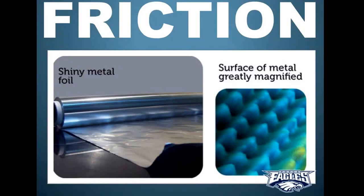Depending on the surface it might be more bumpy or not. Aluminum foil is fairly smooth on the outside, and a shiny silver pot is smooth on the outside, but sandpaper is really quite rough and asphalt is very rough compared to this. Every surface, no matter what, is going to have some sort of bumps on it. There is nothing that is perfectly smooth, and that's why there's always friction — because if this surface rubs against another surface, these little holes and valleys are going to rub against the holes and valleys in the other surface and link together.